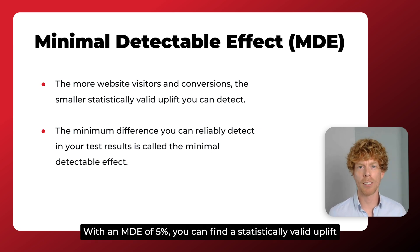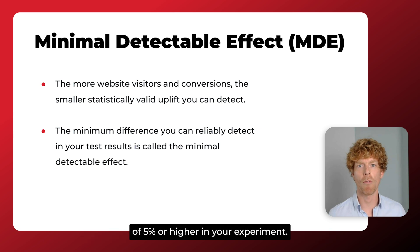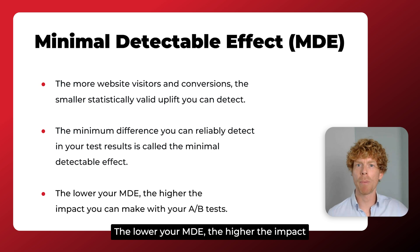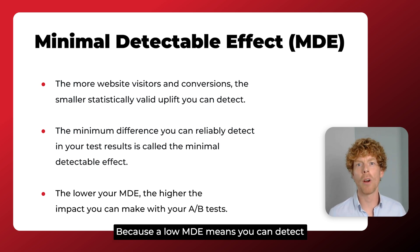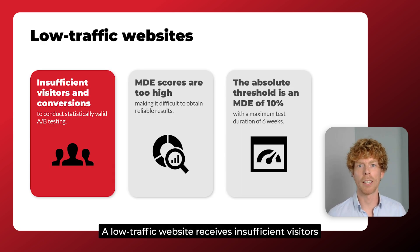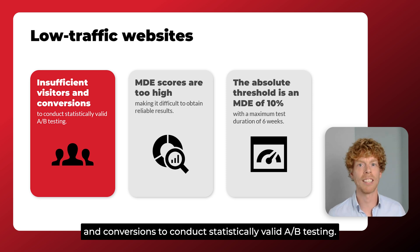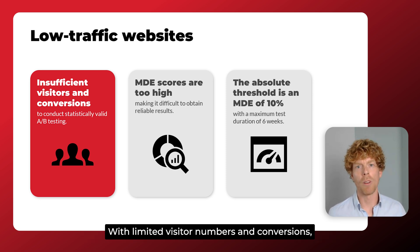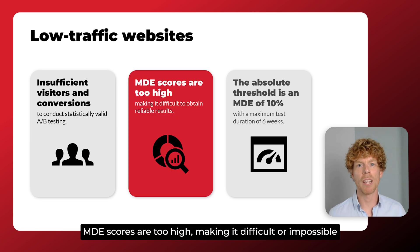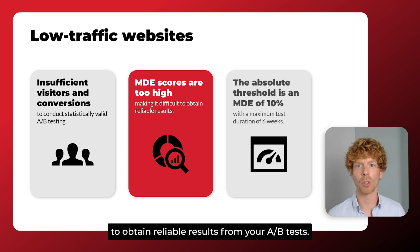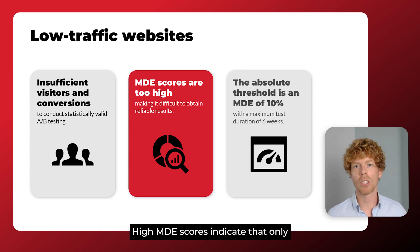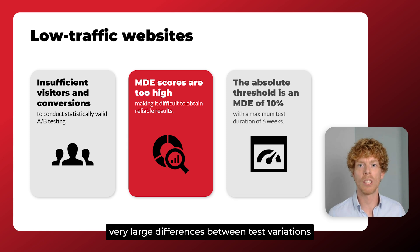With an MDE of 5%, you can find a statistically valid uplift of 5% or higher in your experiment. The lower the MDE, the higher the impact you can make with your A-B test, because a low MDE means you can detect smaller significant changes. A low traffic website receives insufficient visitors and conversions to conduct statistically valid A-B testing. With limited visitor numbers and conversions, MDE scores are too high, making it difficult or impossible to obtain reliable results from your A-B tests. High MDE scores indicate that only very large differences between test variations can be detected with statistical reliability.